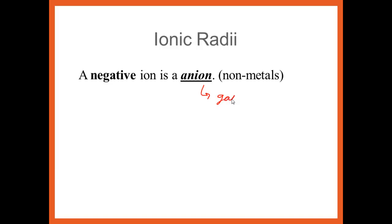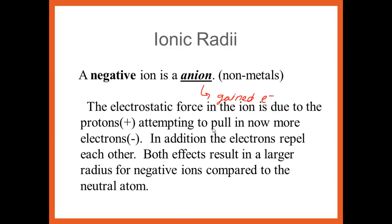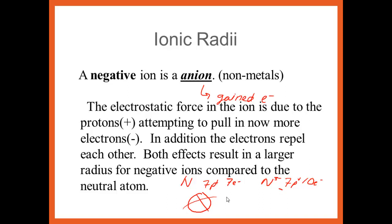An anion — this is because it's gained electrons. Now you have more electrons than protons, so they can't pull them in as tight, so it's going to get bigger. If I have nitrogen with seven protons and seven electrons, when it makes a nitrogen 3- ion, you still have seven protons but now ten electrons. So it gets bigger when you form an anion.